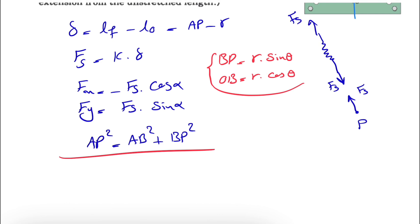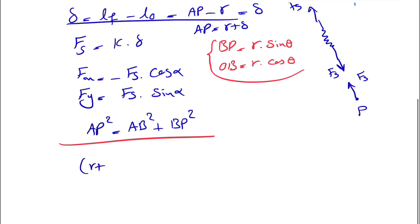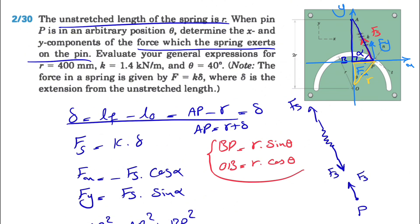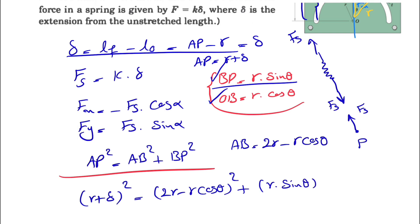Looking at the figure, AP from the first line equals r plus delta, so AP = r + δ. For AP we have: (r + δ)² = AB² + BP². Looking at the figure, the full distance from O to the wall is 2r, and we found OB = r·cos(θ), so AB = 2r − r·cos(θ). Substituting: (r + δ)² = (2r − r·cos(θ))² + (r·sin(θ))².